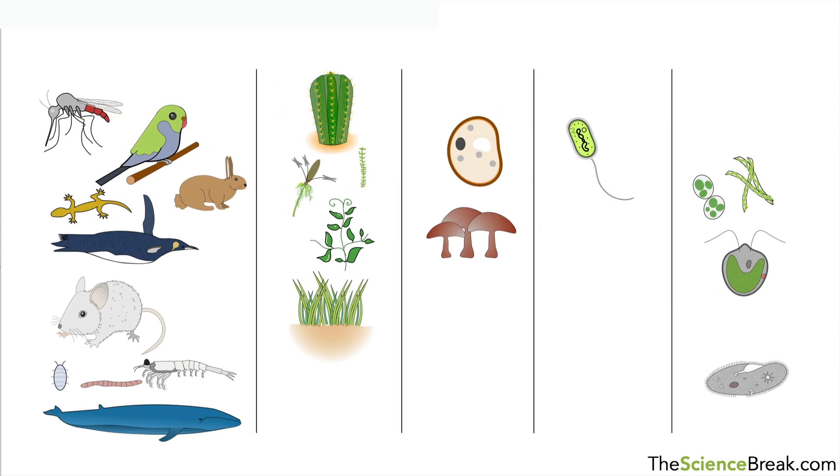We have animals, we have plants, a couple of examples of fungi, just one example of a prokaryote, and a few examples of something called protists. There are, of course, many, many more living things and many more that go into these groups.